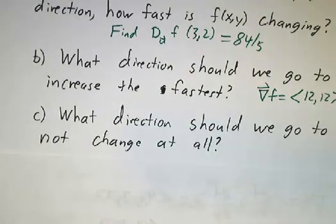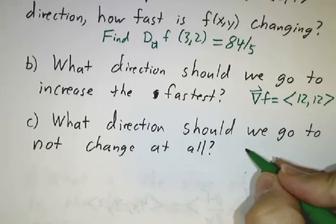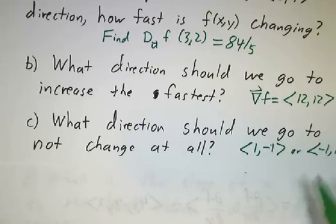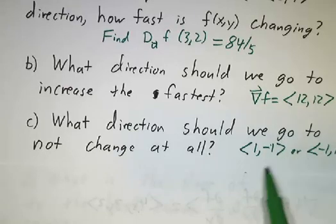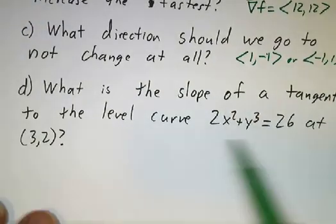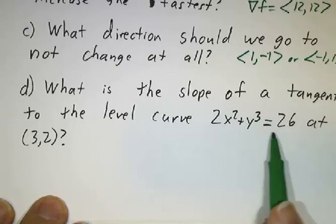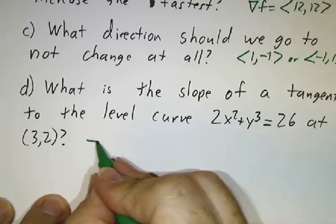What direction should we go if we don't want to change at all? We want to go perpendicular to the gradient. Perpendicular to the gradient means in the direction of (1, -1) or (-1, 1). If we head southeast or northwest, we're going perpendicular to the gradient — which is pointing northeast — and we're not changing at all. If somebody asks for the slope of the tangent line to this level curve, that's the same question: going tangent to the level curve means the function isn't changing, so you must be going in the direction of these vectors, which have slope -1.